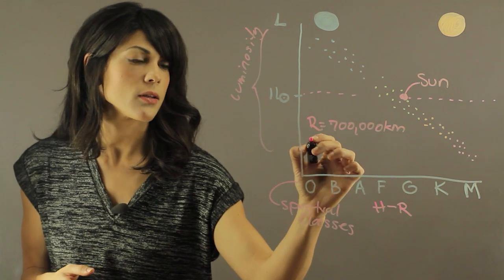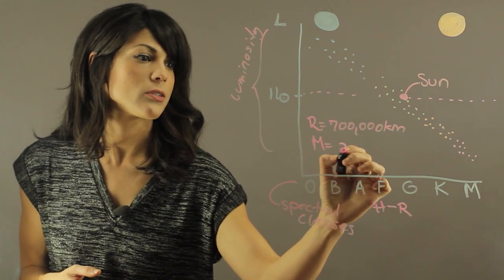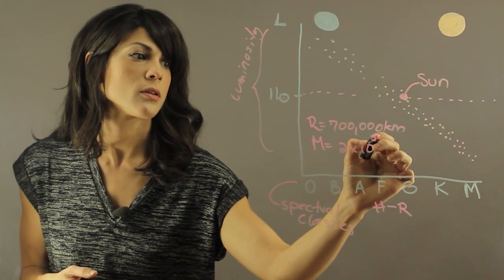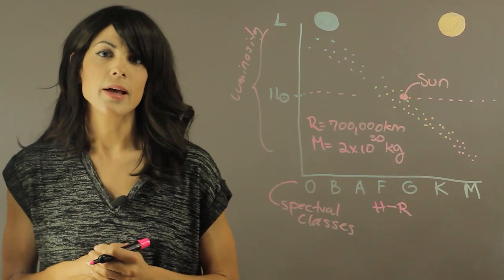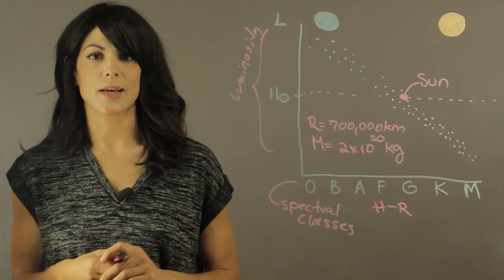And then the mass of our Sun is 2 times 10 to the 30th kilograms. And this is kind of to give you an idea of the size of our Sun.